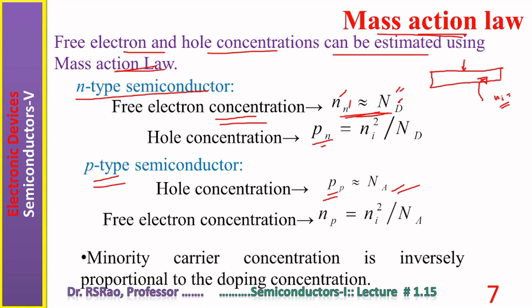To find hole concentration in an n-type semiconductor, we use mass action law: n_n × p_n = n_i², therefore p_n = n_i² / n_n = n_i² / N_D. Similarly, free electron concentration in a p-type semiconductor equals n_i² / N_A. Mass action law thus provides a means to estimate electron and hole concentrations in extrinsic semiconductors from impurity concentrations N_D or N_A and the known value of n_i.